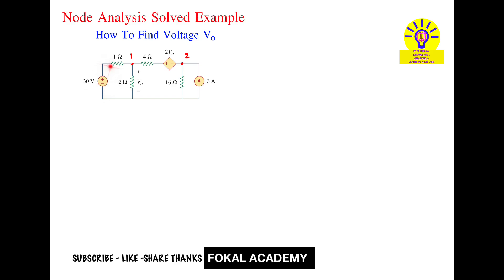For this branch the current will flow here, for this branch the current equation, and for this branch the current equation. At node 1, there are three branches: this is one branch, this is one branch, and this is one branch.